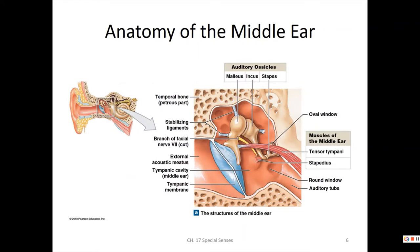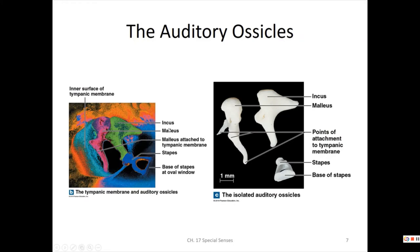The middle ear contains the tympanic cavity holding the auditory ossicles, the tensor tympani, and the stapedius muscles. The stapedius grabs the stapes; the tensor tympani grabs the malleus, which is attached to the tympanic membrane. The auditory ossicles — malleus, incus, and stapes — are very small, and you will identify them on models.